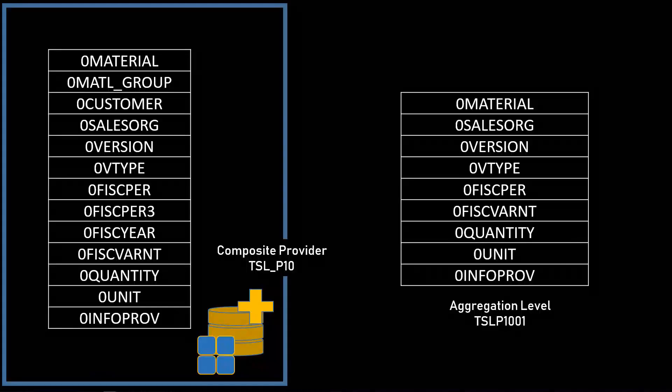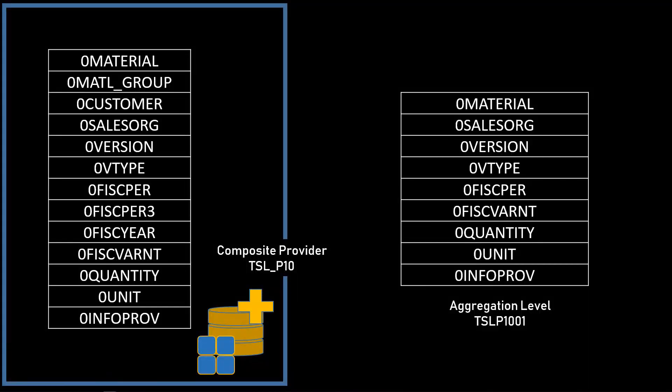Having planning enabled info providers are not enough to start planning. In our scenario, actual volumes are provided from COPA and we want to use those actual volumes to plan into the future. Our model is very simple, containing only a few info objects, but in real life COPA might contain 50 or more characteristics, and all of those characteristics may need to be filled for planning.